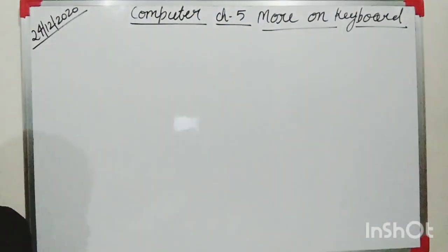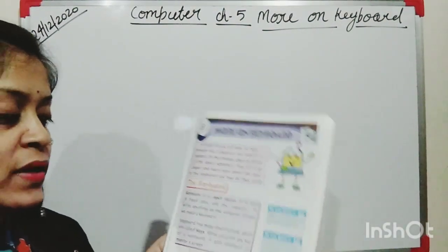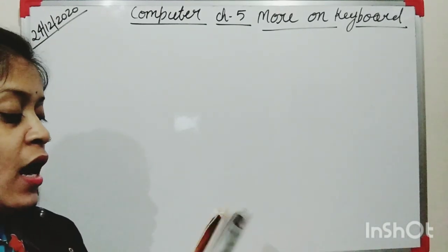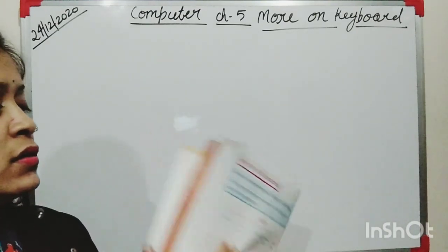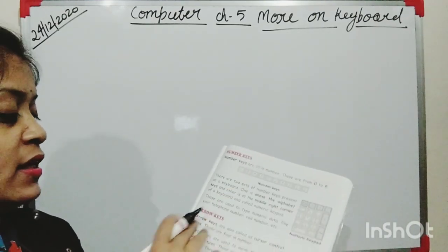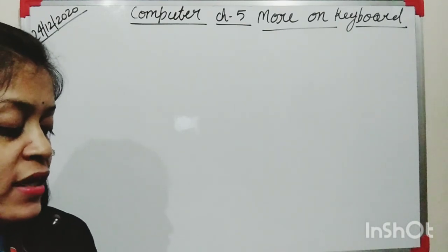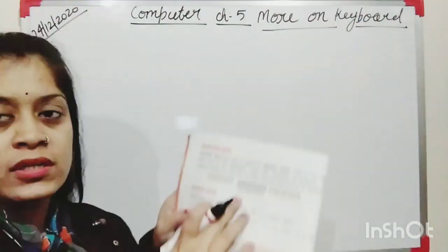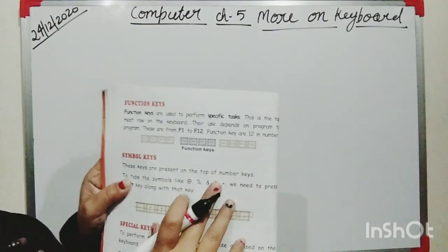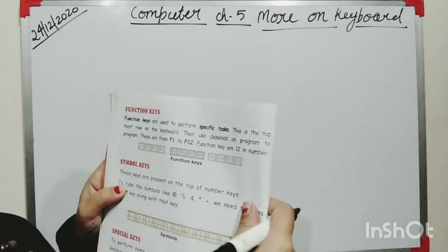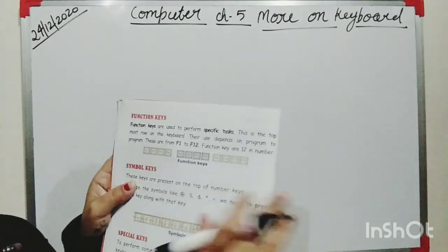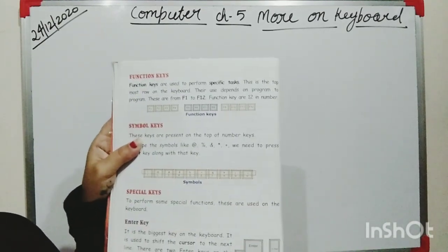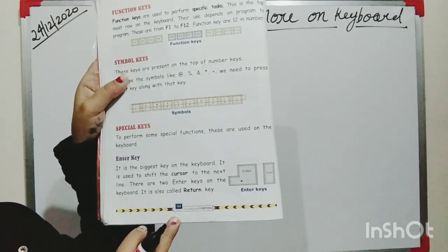In the last class I started this chapter and explained you about the keyboard, the keys of the keyboard, number keys, and arrow keys. In today's class I will start from here — function keys. You can see here in this book. Open page number 44.